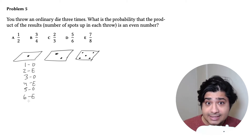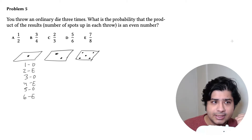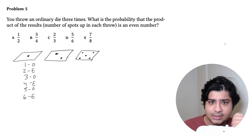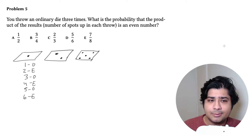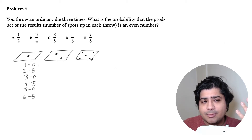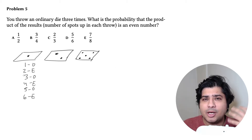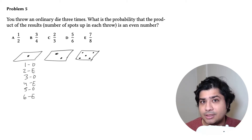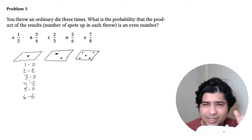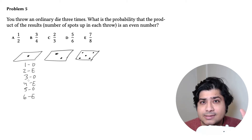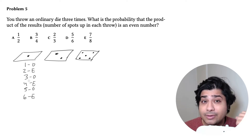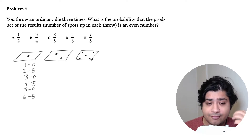What they're asking for is: what is the probability that the product of the results is an even number? Let's not think about all of the specific values, because it's not really important if you're getting a two versus a four — at the end of the day, both of them are even. That's what we're after here.